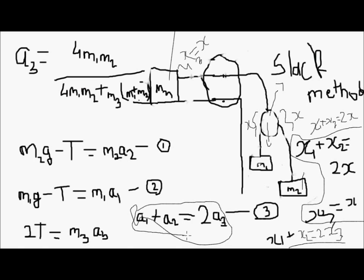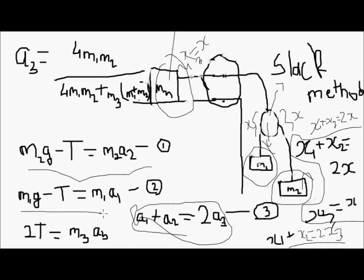Now we write the equations of force using Newton's laws of motion. For block M2: M2g minus T equals M2·a2. For block M1: M1g minus T equals M1·a1. For block M3: 2T equals M3·a3.